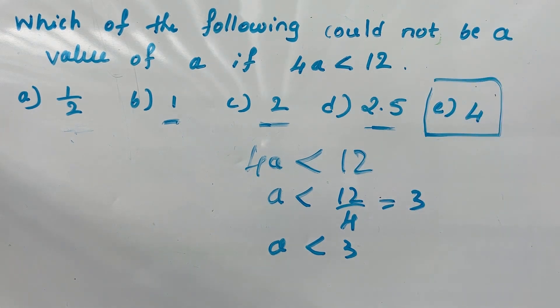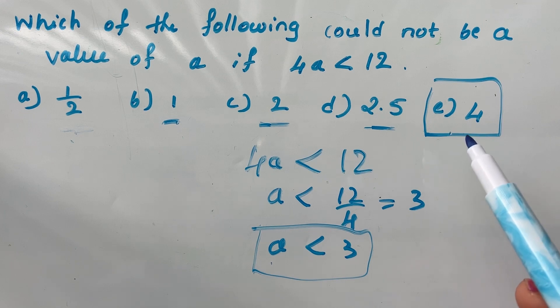But here it's given 4. If a is less than 3, but the value is 4, then a will become greater than 3, so this inequality doesn't hold for a equal to 4. So a equal to 4 could not be a value of a. This is the correct option.